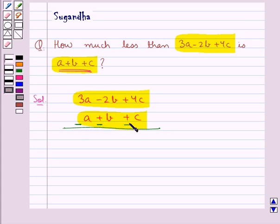Now 3a minus a is 2a, minus 2b minus b is minus 3b, and 4c minus c is plus 3c.